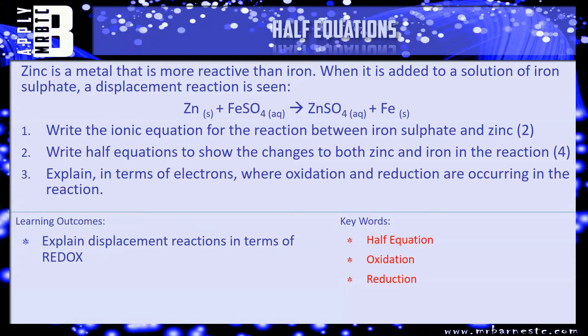Again, if you're not sure how to do ionic equations, on the top right hand corner is a link to be able to do it. Go there now. Question two: Write half equations to show the changes to both zinc and iron in the reaction.